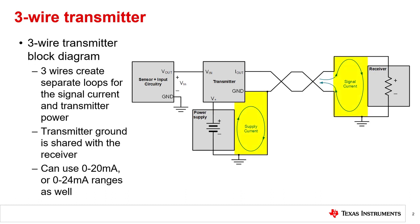The supply current and signal current are in two separate loops. This allows the transmitter to interface with inputs that need to be ground referenced. Because the output signal doesn't include the current consumed powering the sensor and transmitter, the output can go down to 0 milliamps. This allows the designer to use the common 0 to 20 milliamps or 0 to 24 milliamp output spans as well.